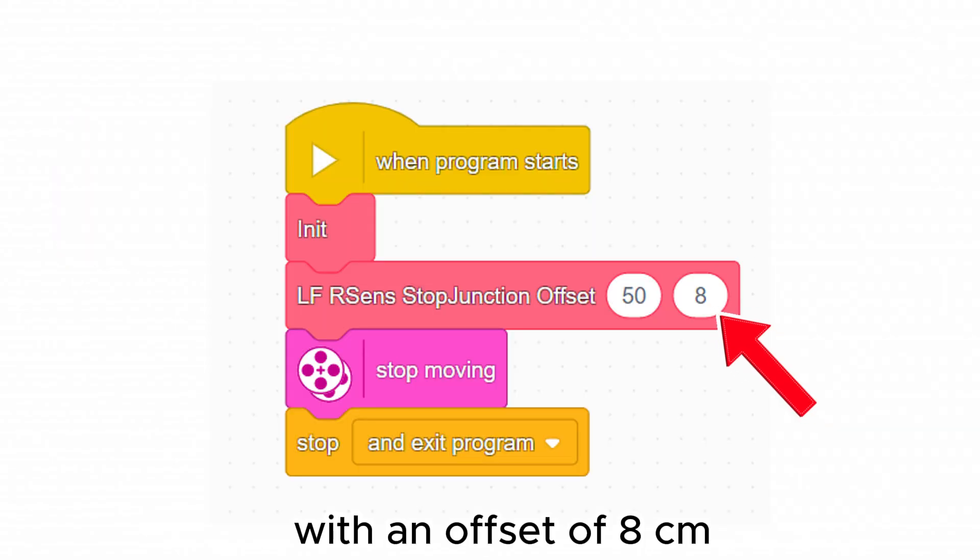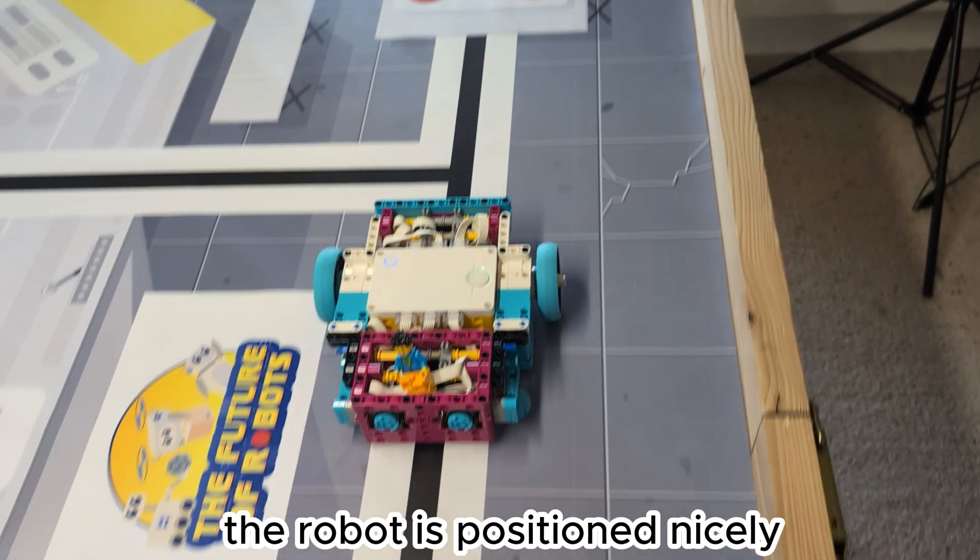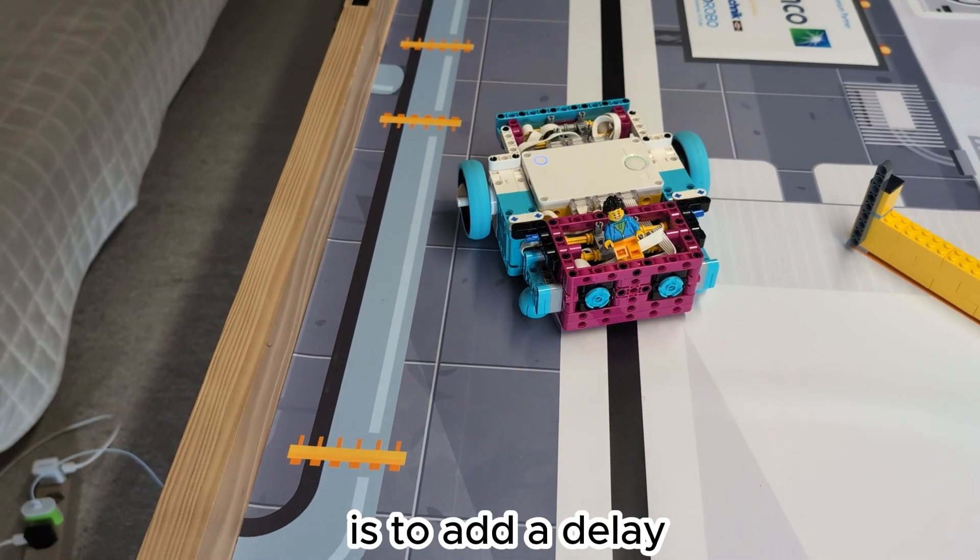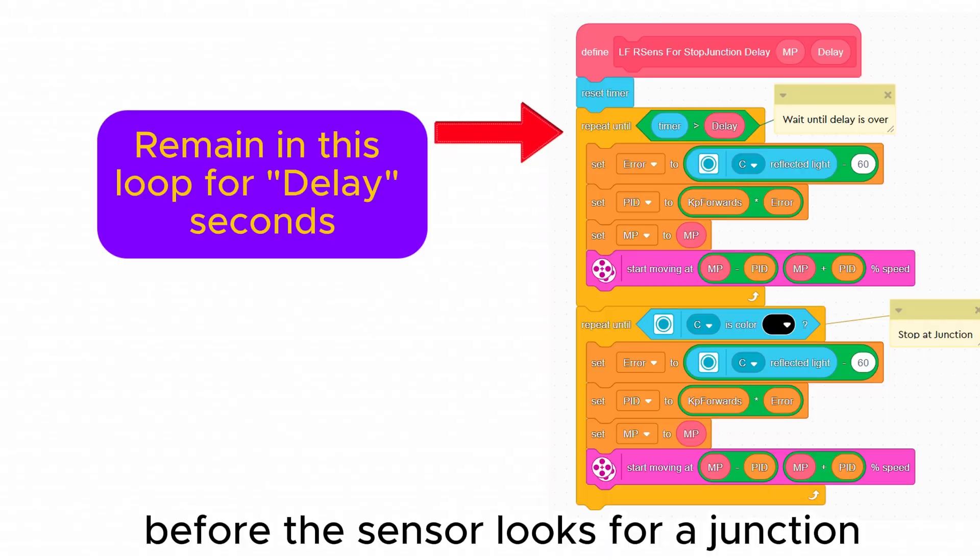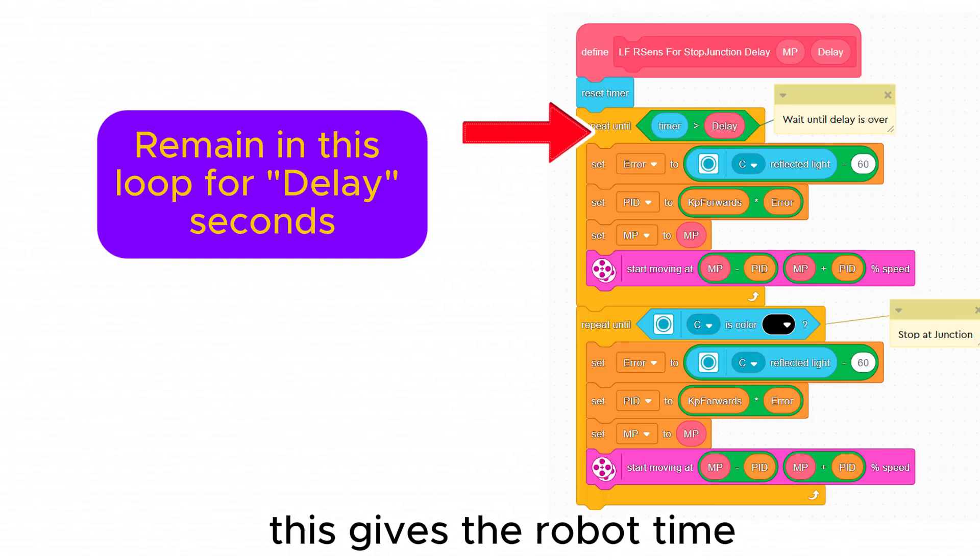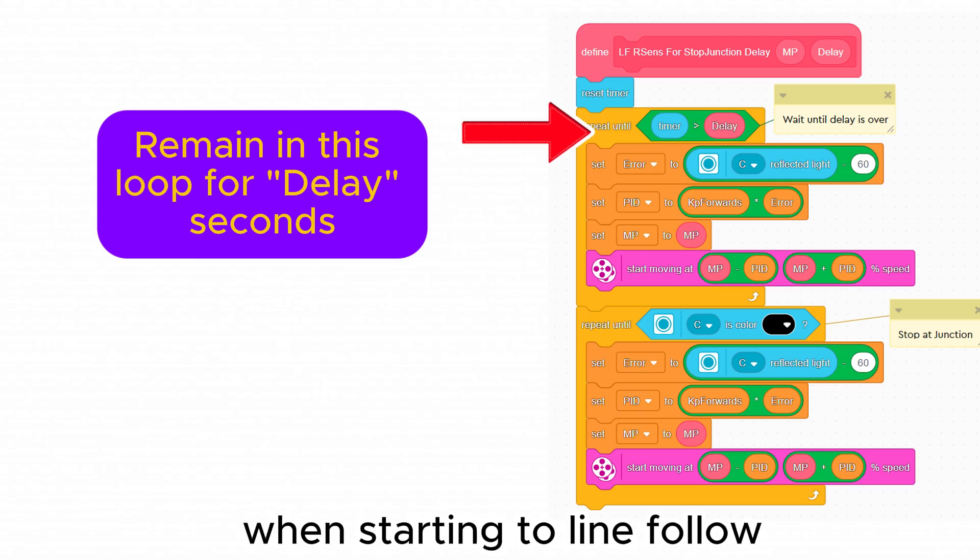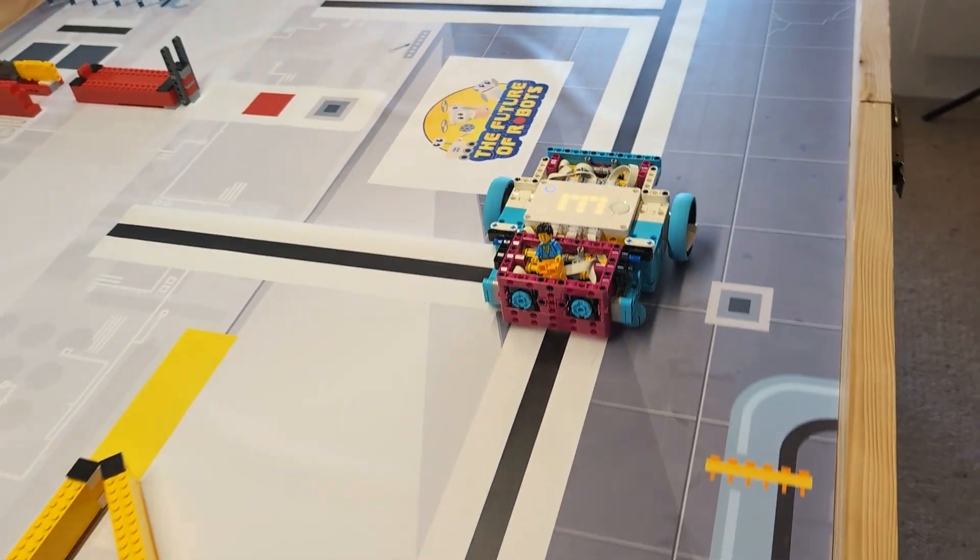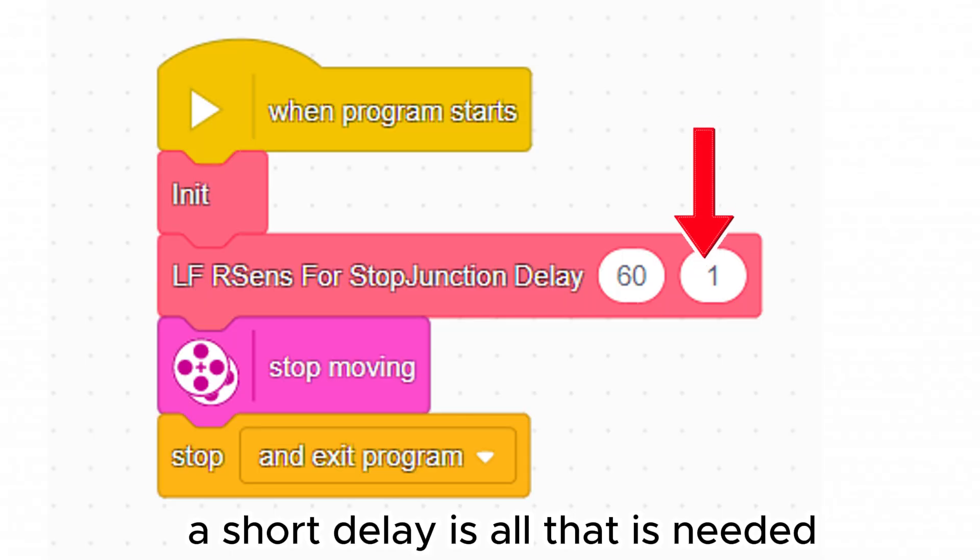The other improvement we can make is to add a delay before the sensor looks for a junction. This gives the robots time to get on the line when starting to line follow. A short delay is all that is needed.